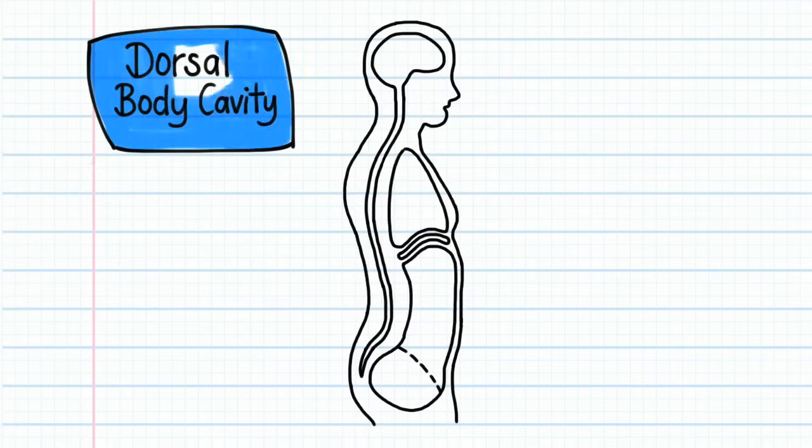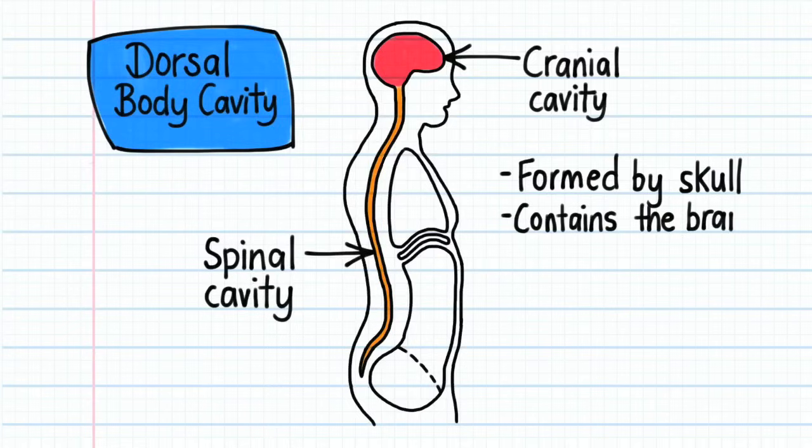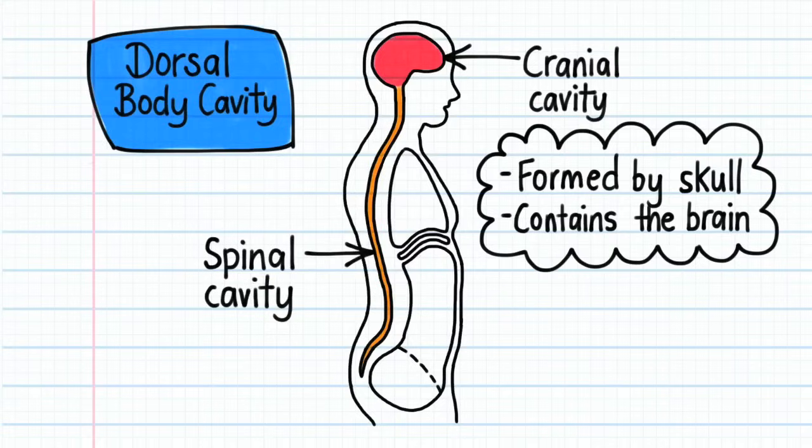Let's start with the dorsal body cavity. It can be divided into two parts: the cranial cavity and the spinal cavity. The cranial cavity is the space formed by the bones of the skull. It contains the brain.